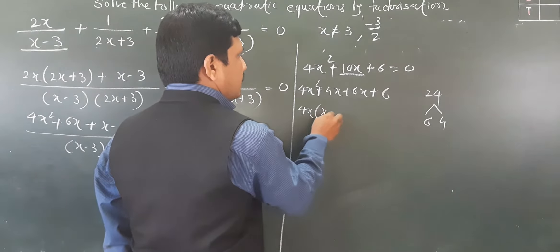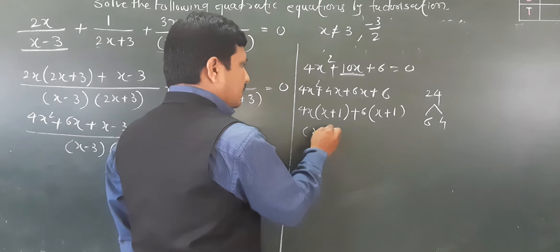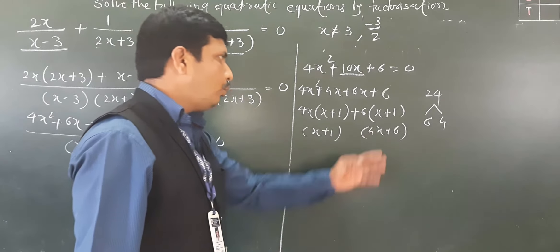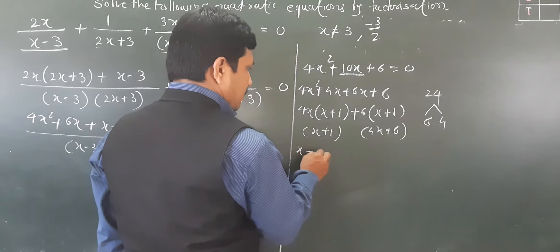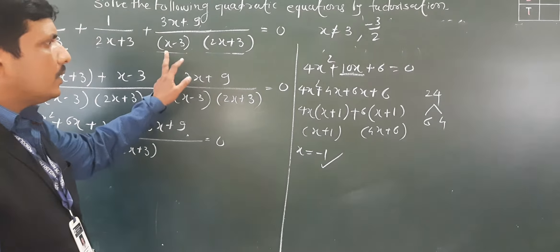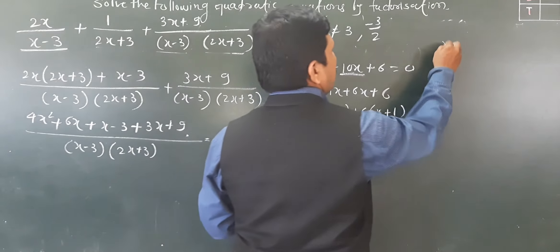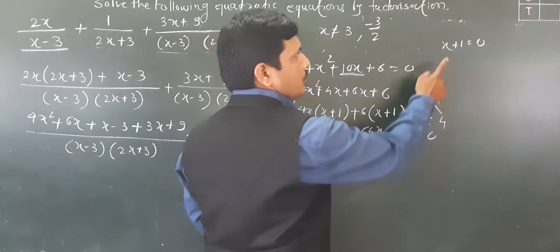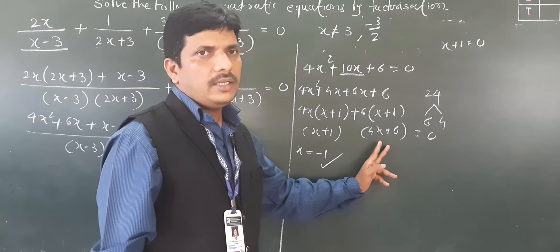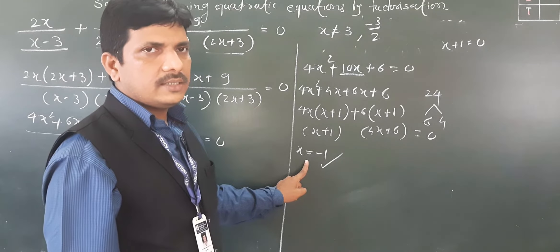So the factored form is (x + 1)(4x + 6) = 0. From x + 1 = 0 we get x = −1. From 4x + 6 = 0 we get x = −6/4 = −3/2, but x = −3/2 is excluded by the constraint. So the correct answer is x = −1 only.